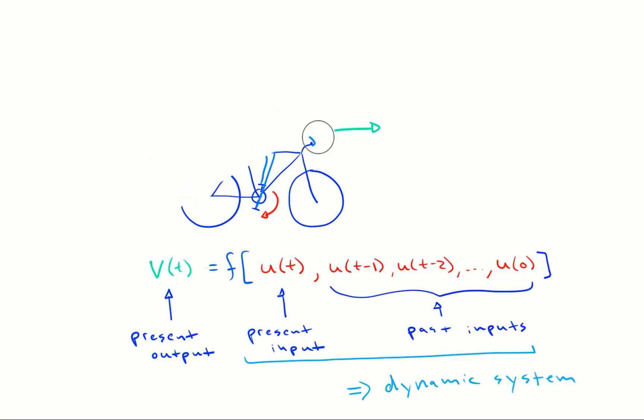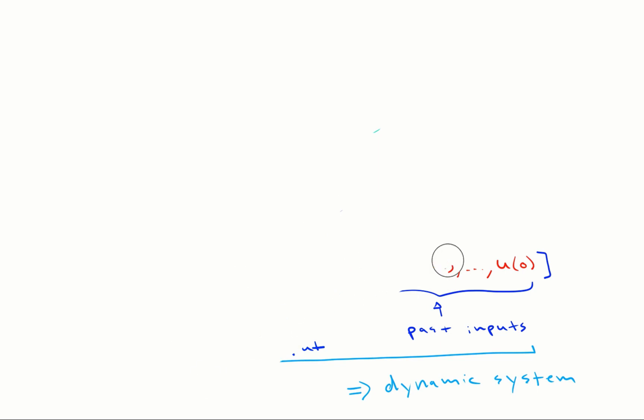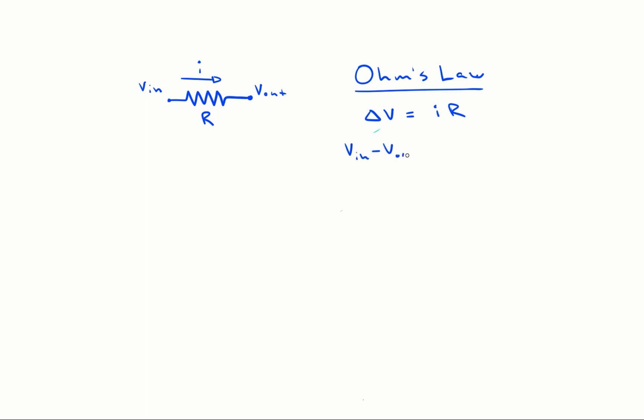On the other hand, the present output of a static system is only dependent on the present input. A resistor, for example, is governed by Ohm's law, which states that the voltage drop across the resistor is equal to the product of the current flowing through it and the resistance r.